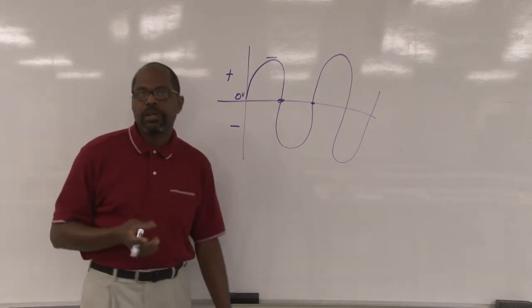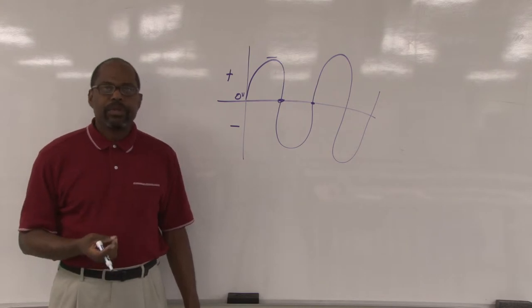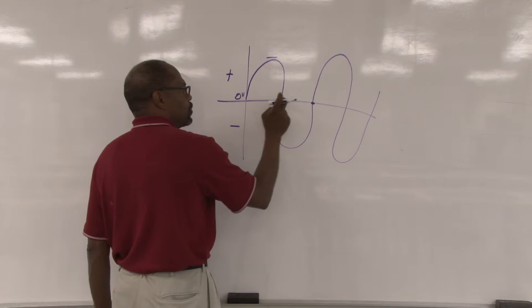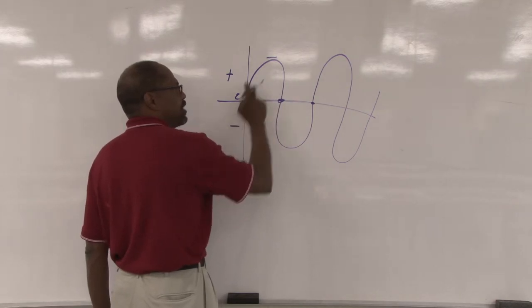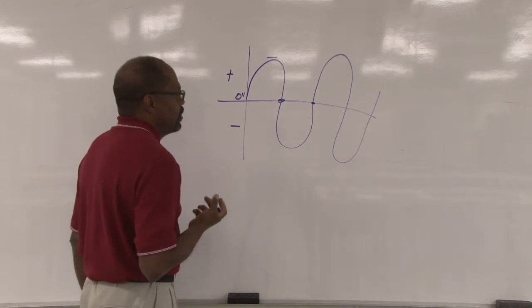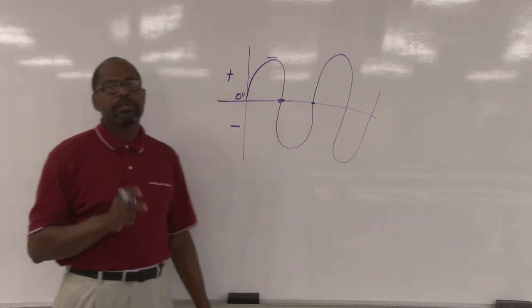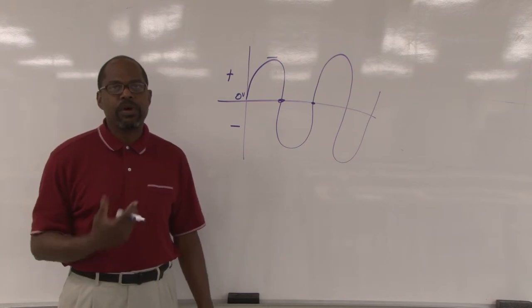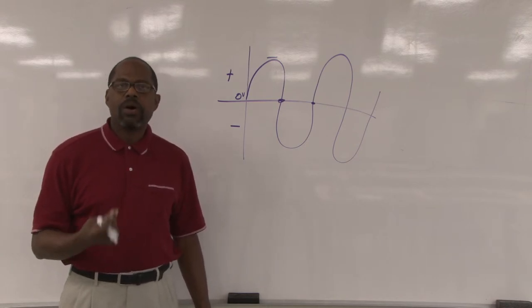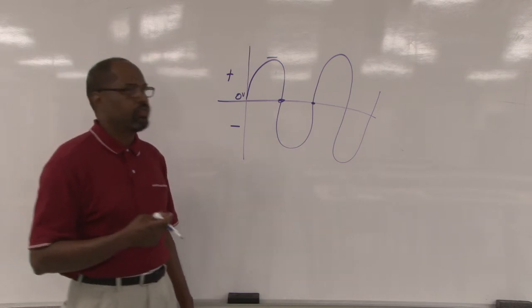In the United States, there are 60 cycles per second. So as it flows 60 times per second, this is changing polarity and it's producing an AC current. AC power is created by generators and alternators, which use magnets and coils or wires inside of that device to produce electricity.